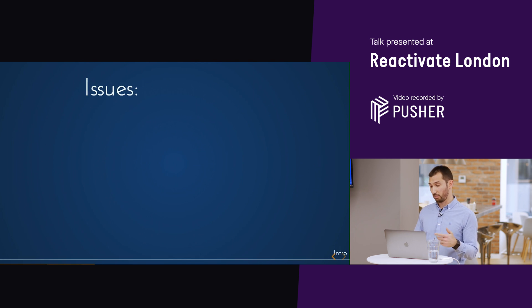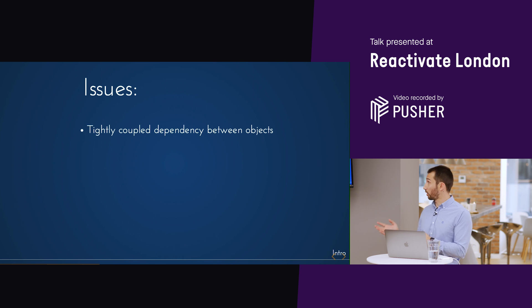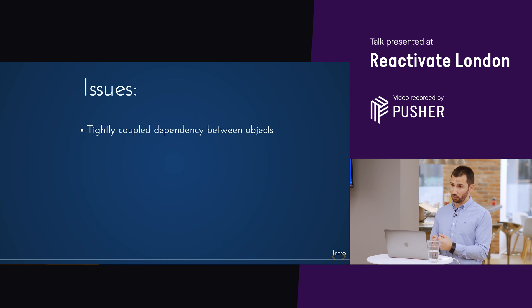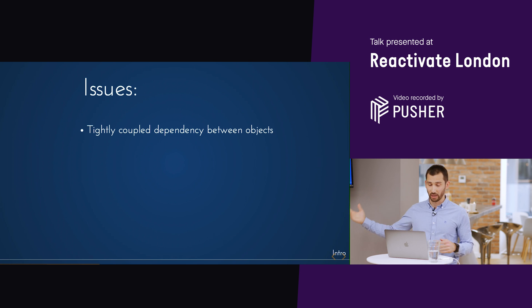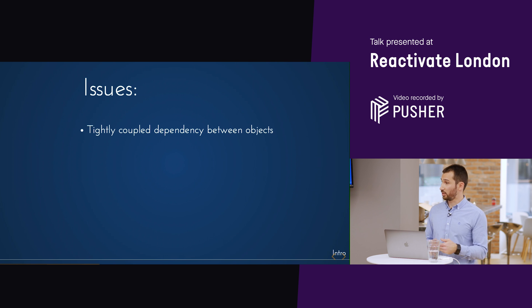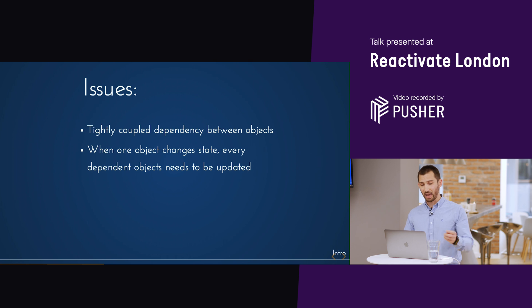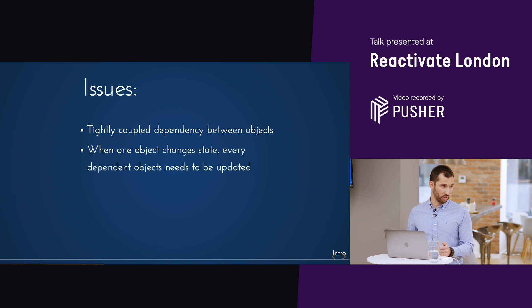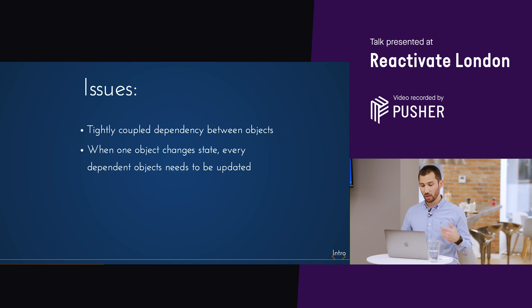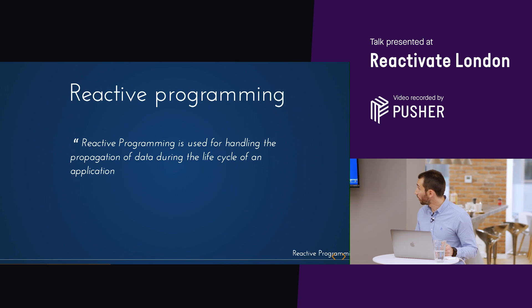Using this kind of approach has some issues. The two objects are coupled together because we need to pass the main object as a dependency injection, and the receiver — receipt — needs to know which method to trigger to get a specific output. The second common issue is that every time the state changes, we need to update all dependent objects. So we need to notify all those changes to all dependent objects. How can we fix this with reactive programming?